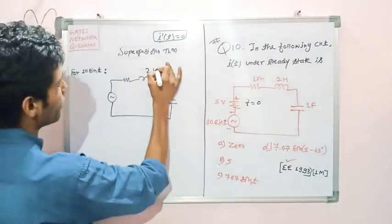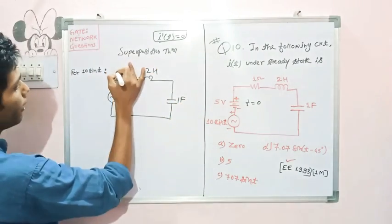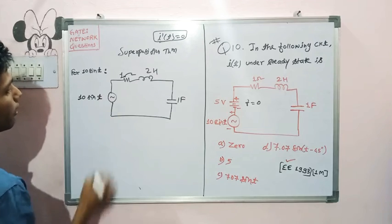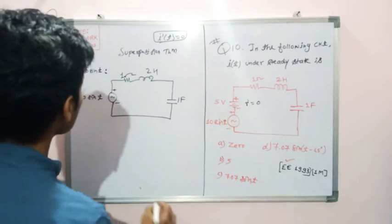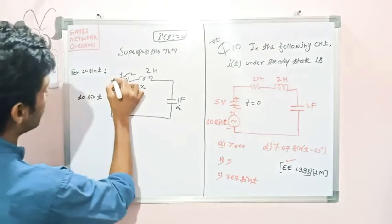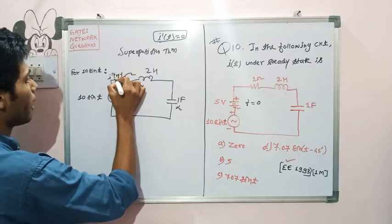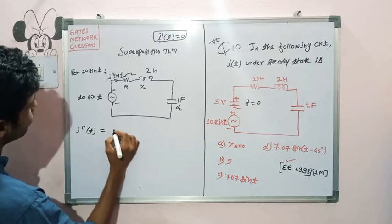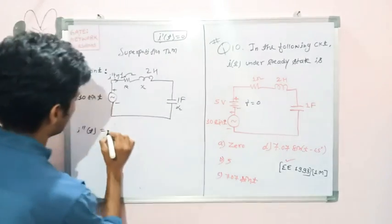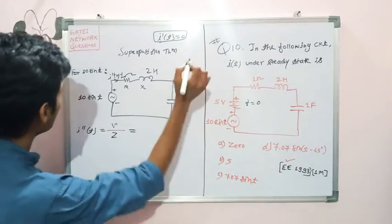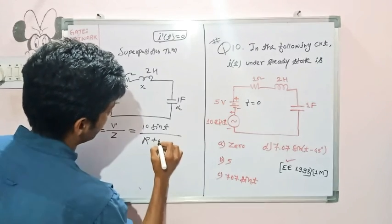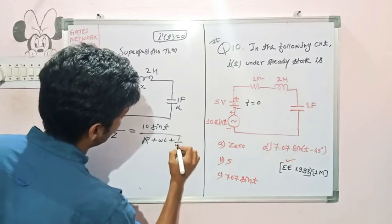The circuit has a 2-henry inductor, a 1-farad capacitor, and a 1-ohm resistor, with the 10sinT source. The current I''(T) equals V divided by Z. In the AC circuit, V is 10sinT, and Z equals R plus jωL plus 1/(jωC).